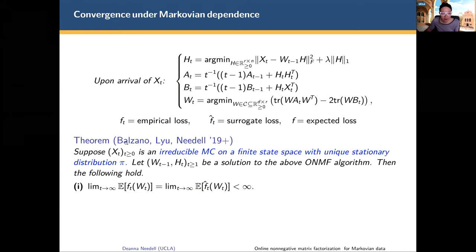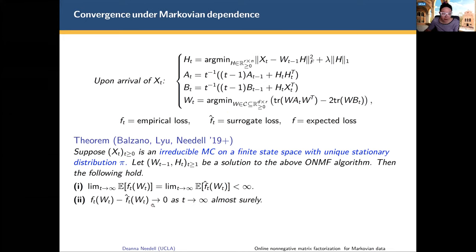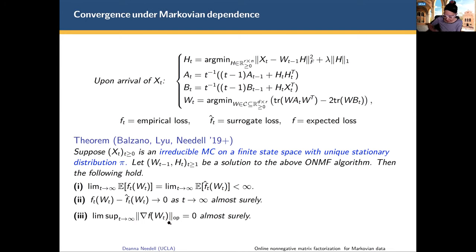What we were able to prove — this is with Laura, Han, and myself — is that if instead of an IID data sequence we have an irreducible Markov chain on a finite state space with unique stationary distribution pi, then we get similar results. We again have the same convergence of the empirical loss and the surrogate loss, suggesting the replacement is reasonable. We also get that the error and the gradient both go to zero almost surely. This is our main theoretical contribution, replacing the IID assumption with a Markov chain assumption.